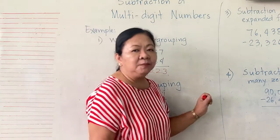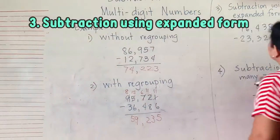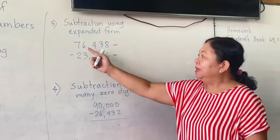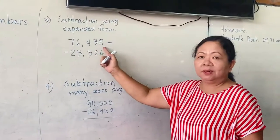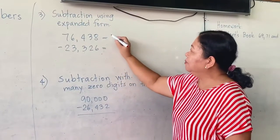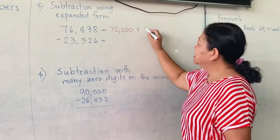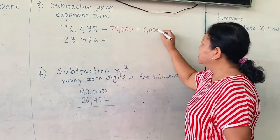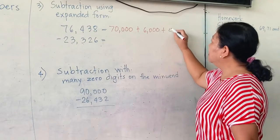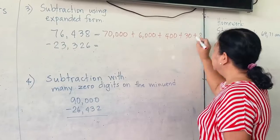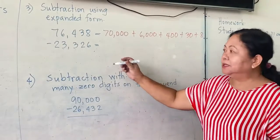Next example, number 3, is about subtraction using expanded form. So here we have 76,438. The expanded form is 70,000 plus 6,000 plus 400 plus 30 plus 8.